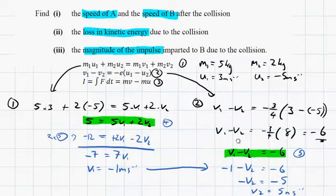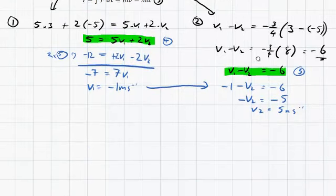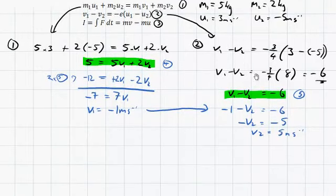Now it's up to us to find the loss in kinetic energy due to the collision. We're on to part 2. So kinetic energy is always worked out by 1 half mv squared.